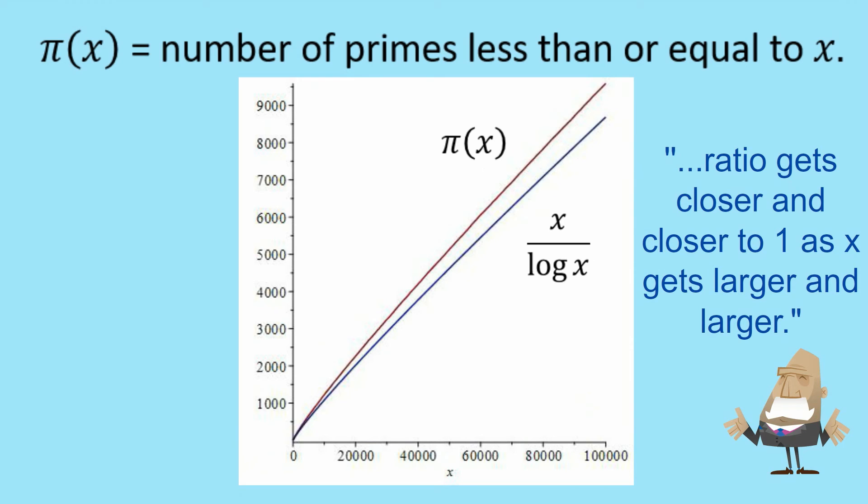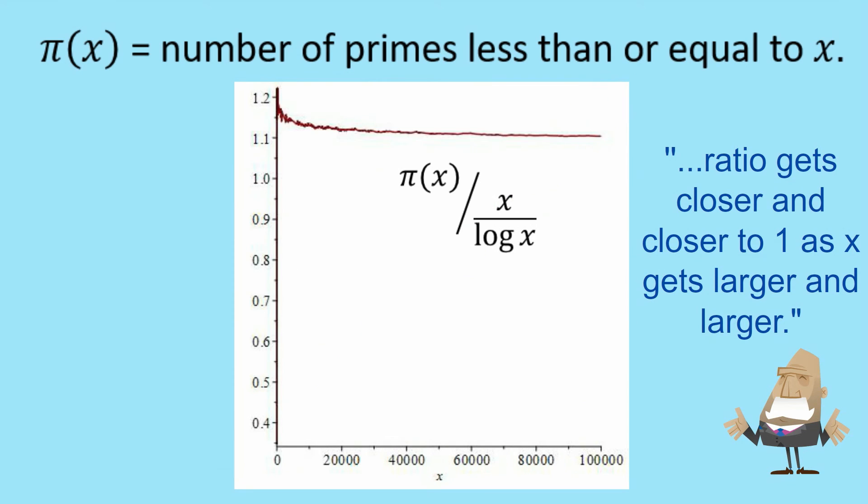So now let's look at a graph of π(x) divided by x over log x. And you can see here, as we go out to 100,000, it does seem to be coming down and leveling off. And it does seem to be getting closer to 1, although it's not convincing.